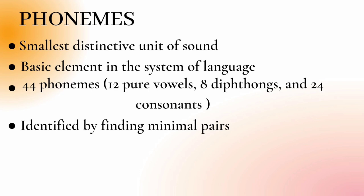First of all, we should know about the term phonemes before moving to the topic allophones. What is a phoneme? Phonemes are the smallest distinctive unit of sounds that distinguishes one word from another. It is the basic element in the system of language. There are 44 phonemes in English, distinguished into 12 pure vowels, 8 diphthongs, and 24 consonants.